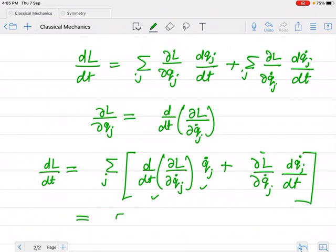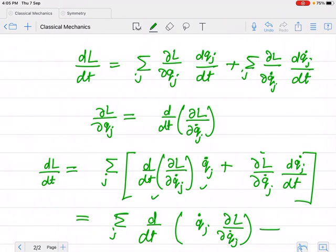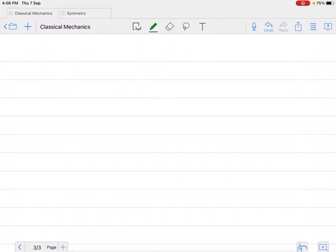Combined, we can write it as the total time derivative of qj dot times (del L over del qj dot). If you open this expression, you will find that dL over dt is now the total derivative.